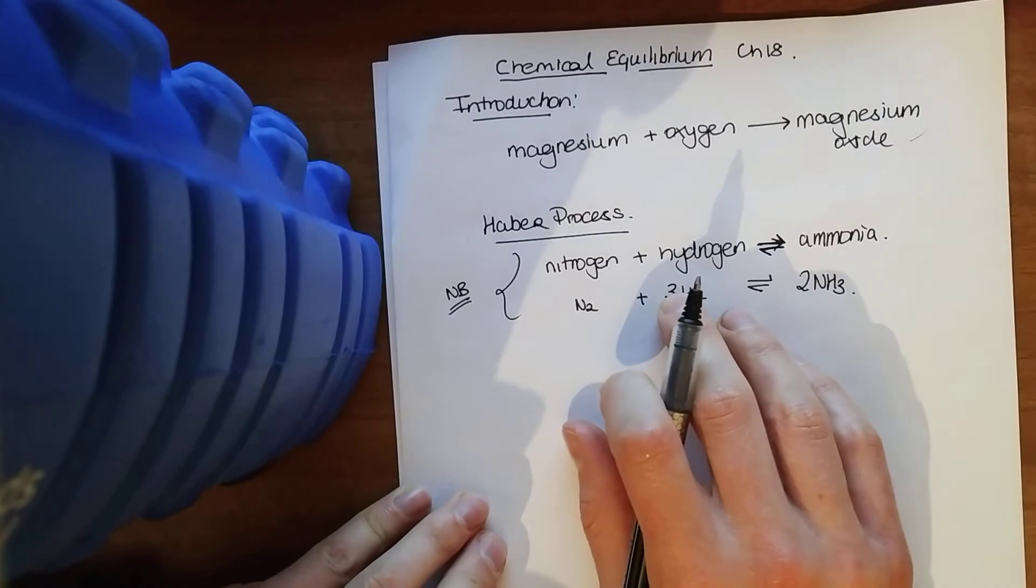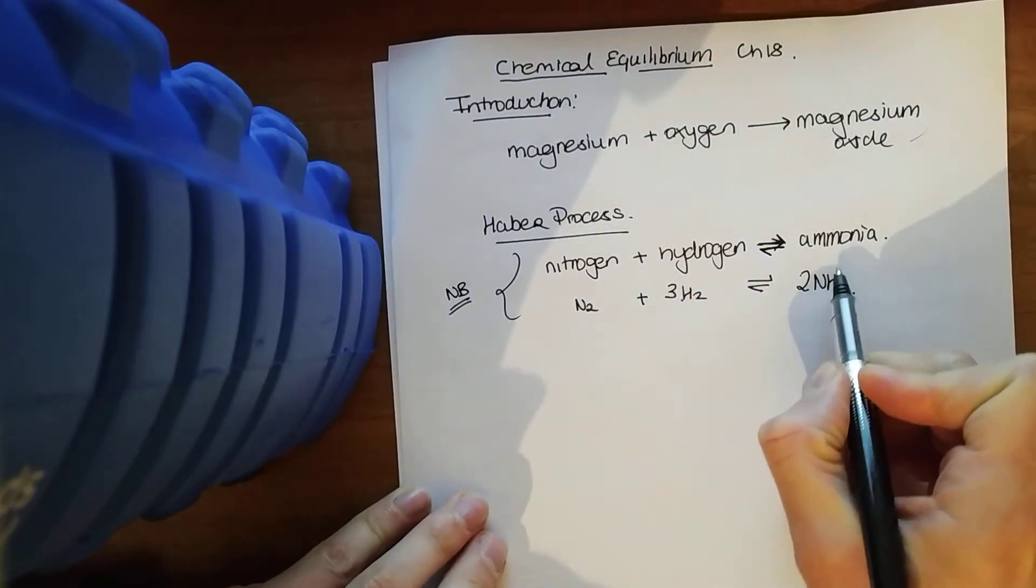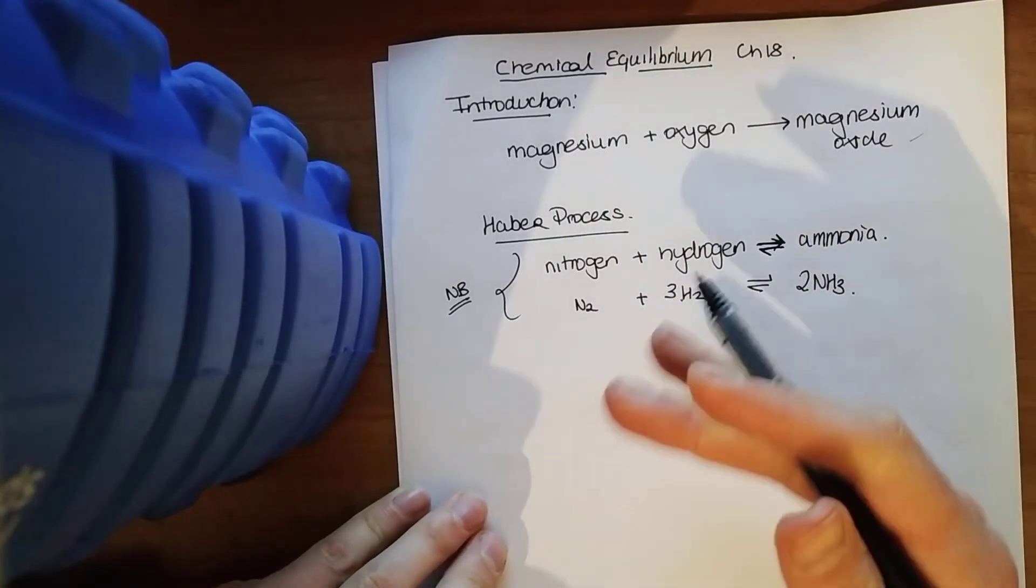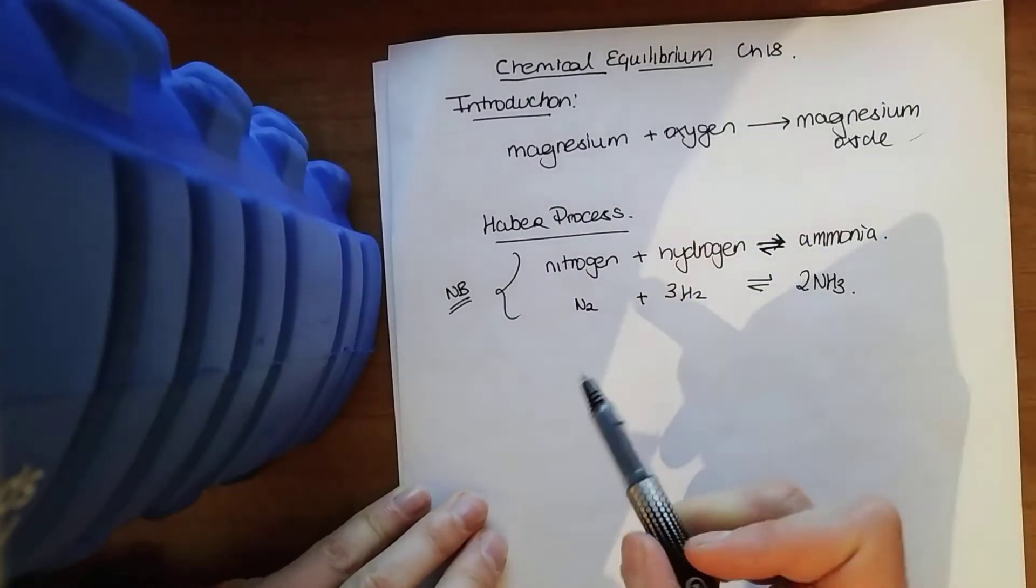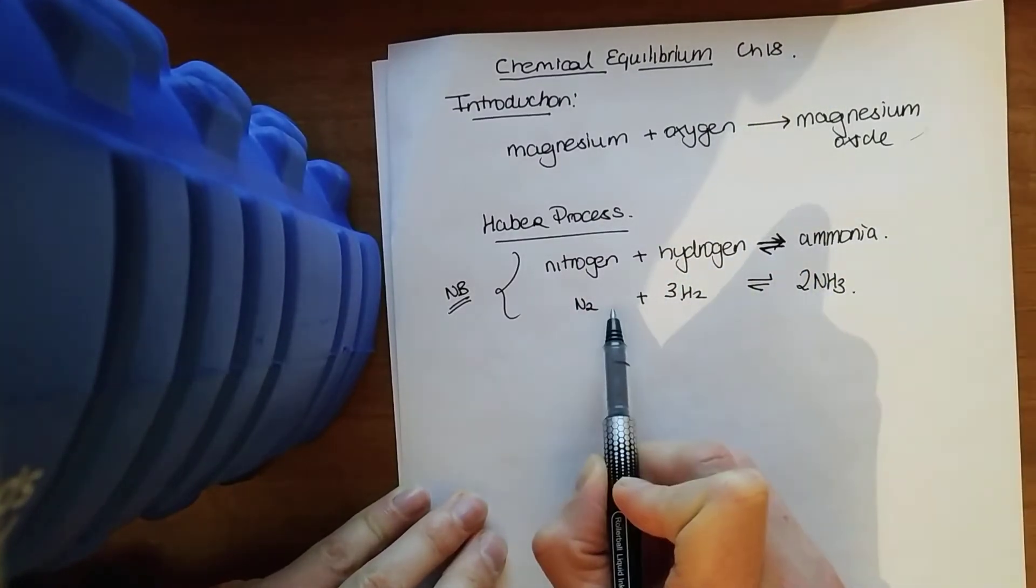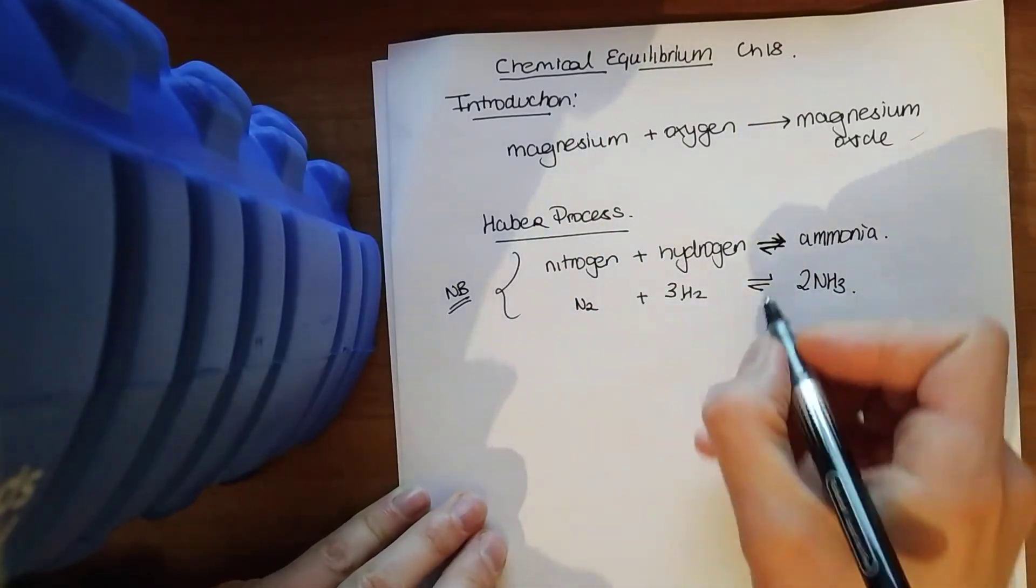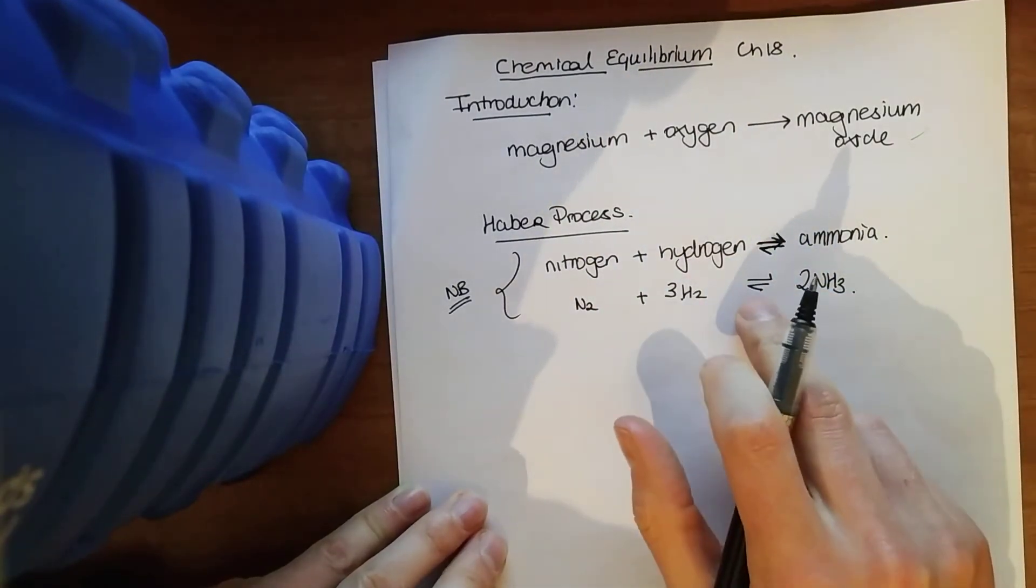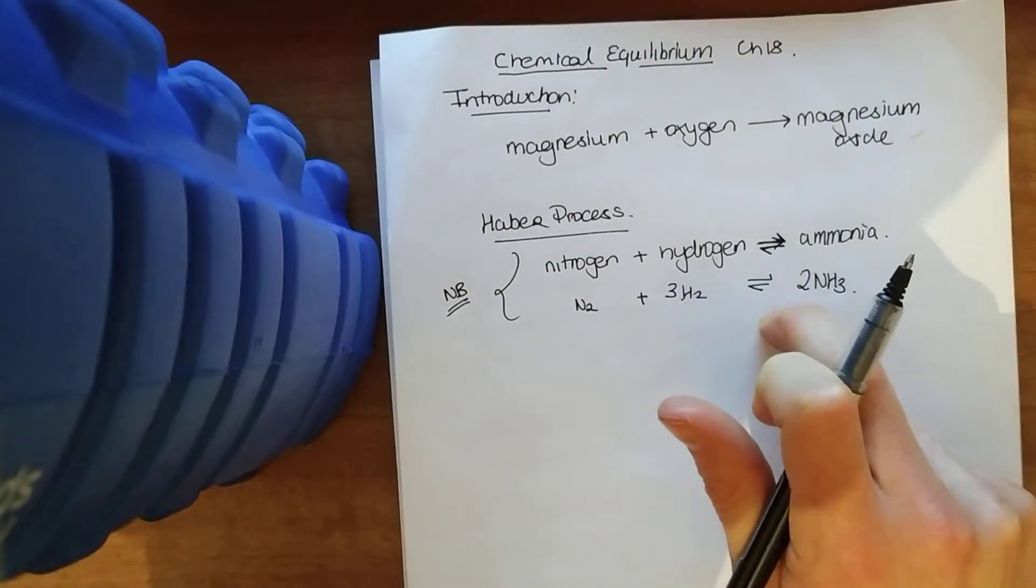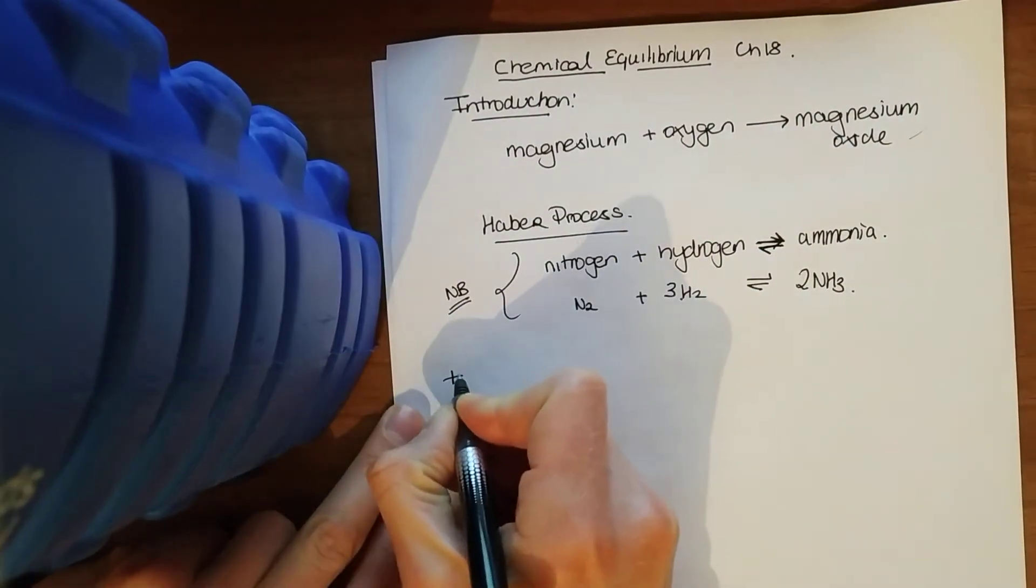So this reaction doesn't go to completion. Our nitrogen and hydrogen react to form ammonia. But at the same time, that ammonia is decomposing to form our nitrogen and hydrogen. So if we take that in a general context, our reactants are forming products, but our products are also decomposing to form our reactants. And this arrow here indicates a reversible reaction.